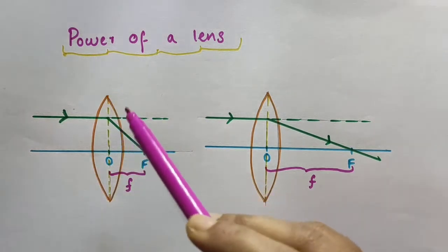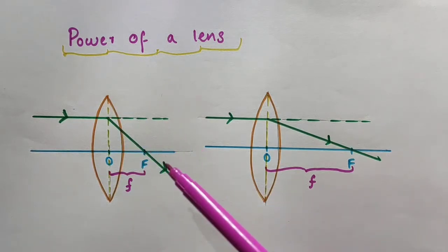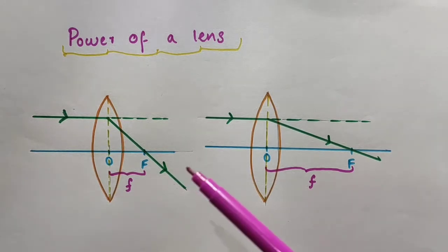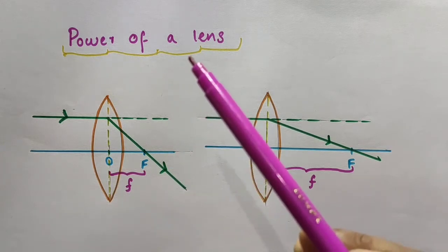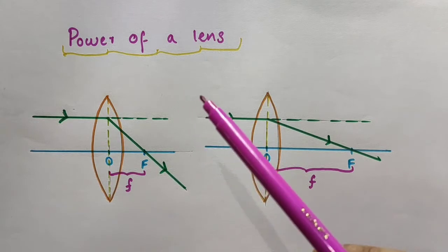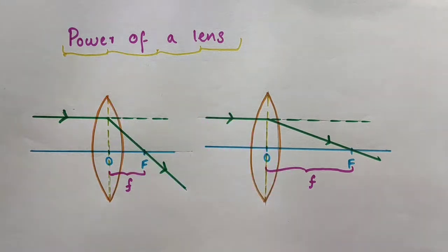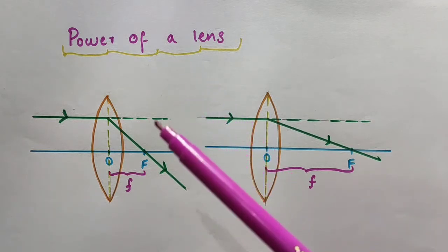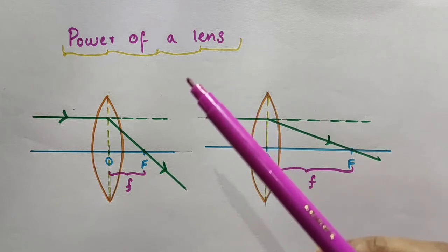Power of a lens is actually a measure of convergence or divergence which a lens introduces in the light falling on it. That lens can be a convex lens or a concave lens. The degree of convergence or divergence of light rays achieved by a lens is expressed in terms of its power. The ability of a lens to converge or diverge light rays depends on its focal length.